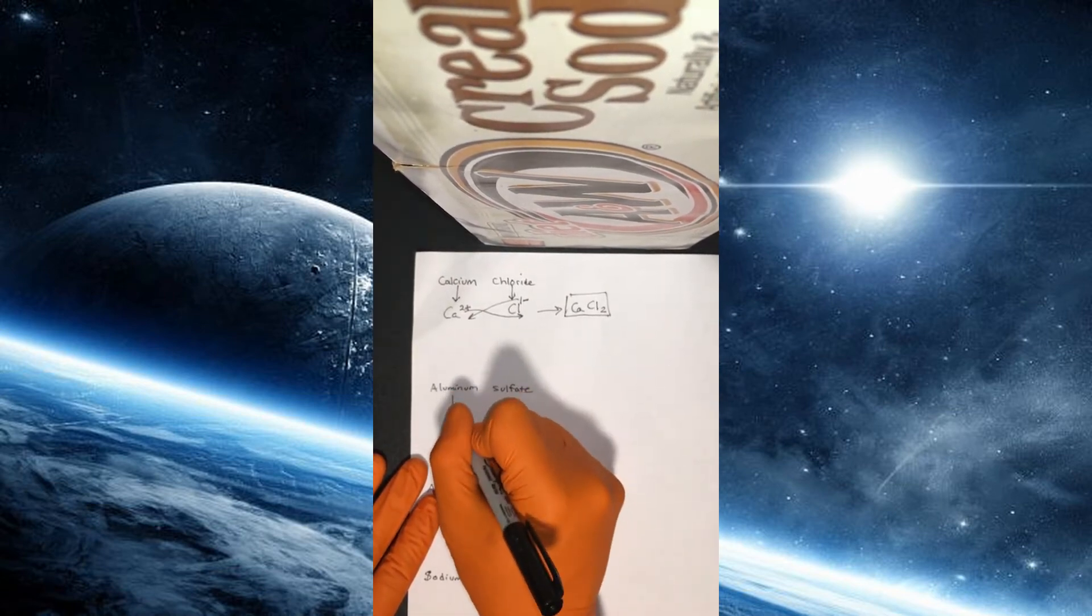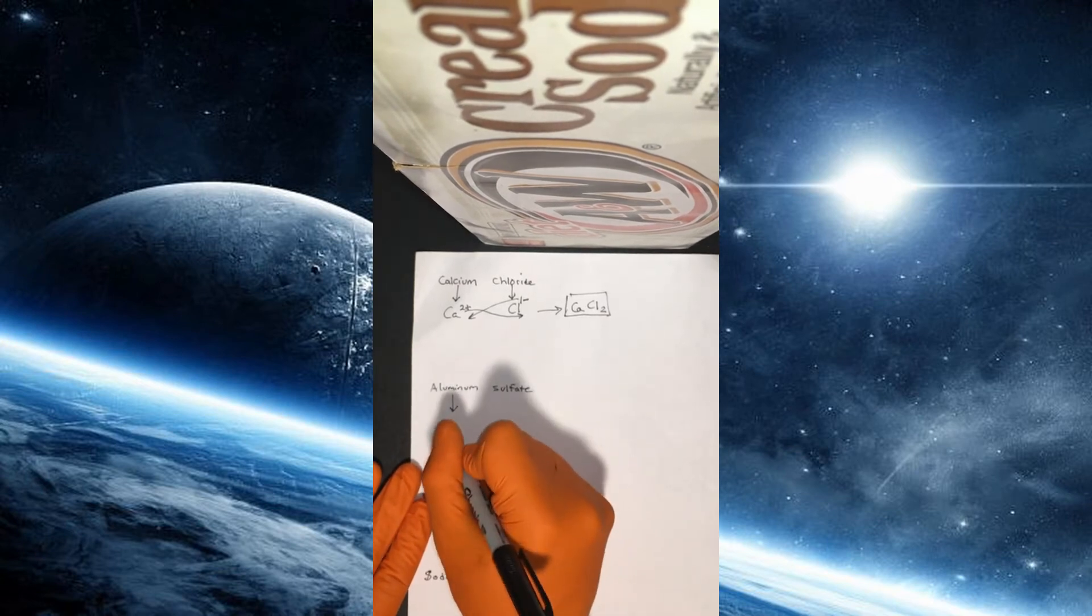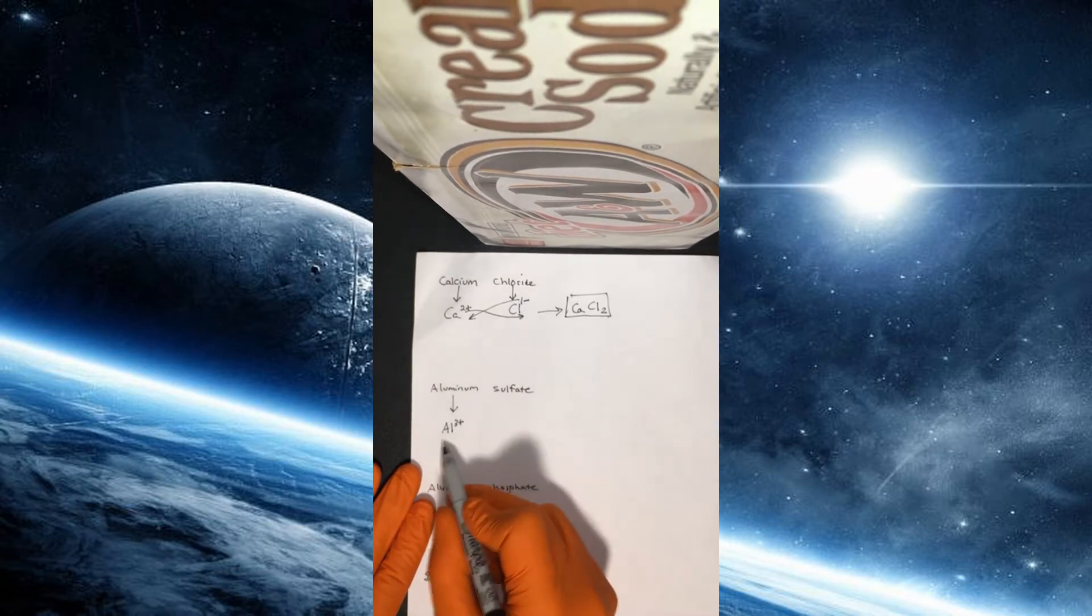Aluminum sulfate. So first of all, what is aluminum? This is in group 3A. So this is going to have a charge Al 3 plus. You can also memorize this.